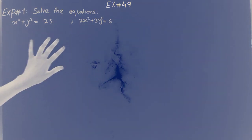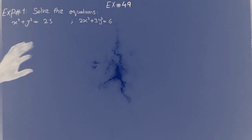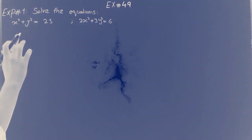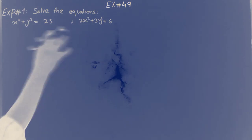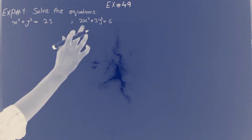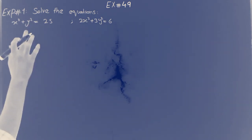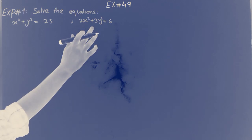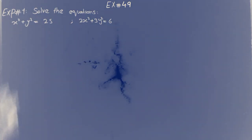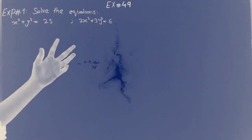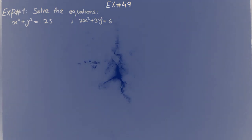Both equations have two variables — x and y variables. We have this equation with x-square coefficient 1 and x-square coefficient 2. We have y-square coefficient 1 and y-square coefficient 3. If we had section 4.8, we had the coefficients of x-square and y-square, and we cancel them out.